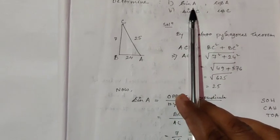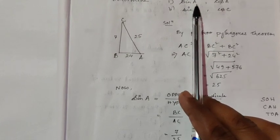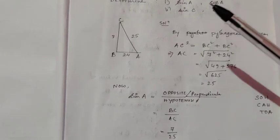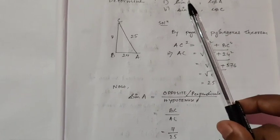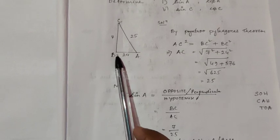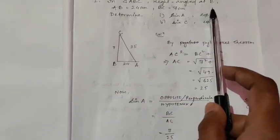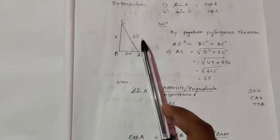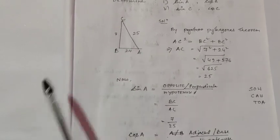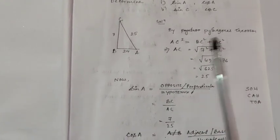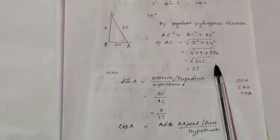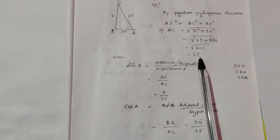We don't know the angle value directly, but we can use trigonometric ratios. In this right-angle triangle, since it is right-angled at B, angle B is 90 degrees, so the opposite side will be the hypotenuse. AB is 24, BC is 7, and using the Pythagoras theorem we find that AC, the hypotenuse, is equal to 25. I think that is clear.